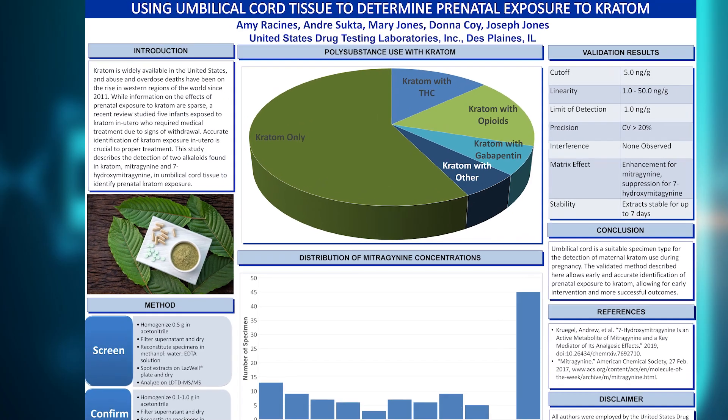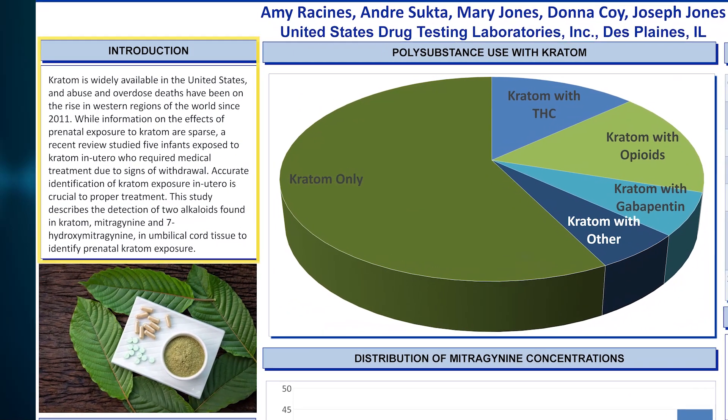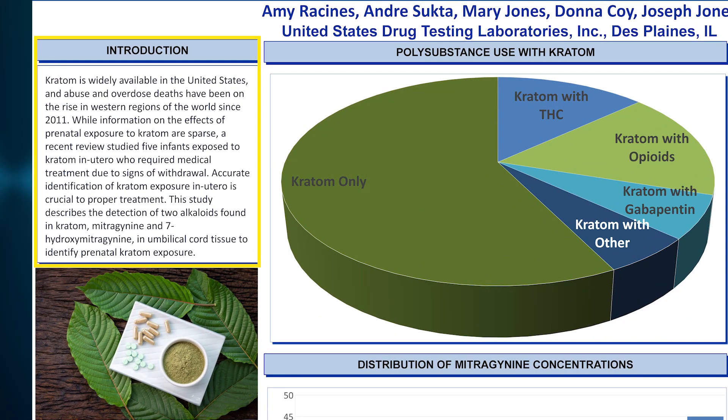Kratom is an herbal extract that comes from the leaves of an evergreen tree that is native to Southeast Asia. The leaves of that plant can be chewed, ingested, or brewed in tea, or the kratom can be extracted from the plant and put into pill form for various uses. At low doses, kratom acts as a stimulant, but at high doses it acts as a sedative, and it does have effects similar to those experienced by opioid users.